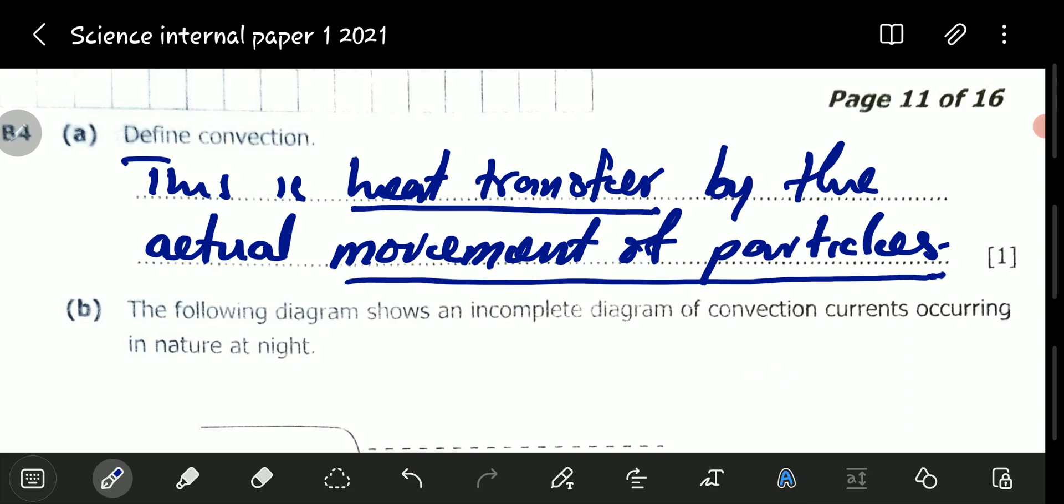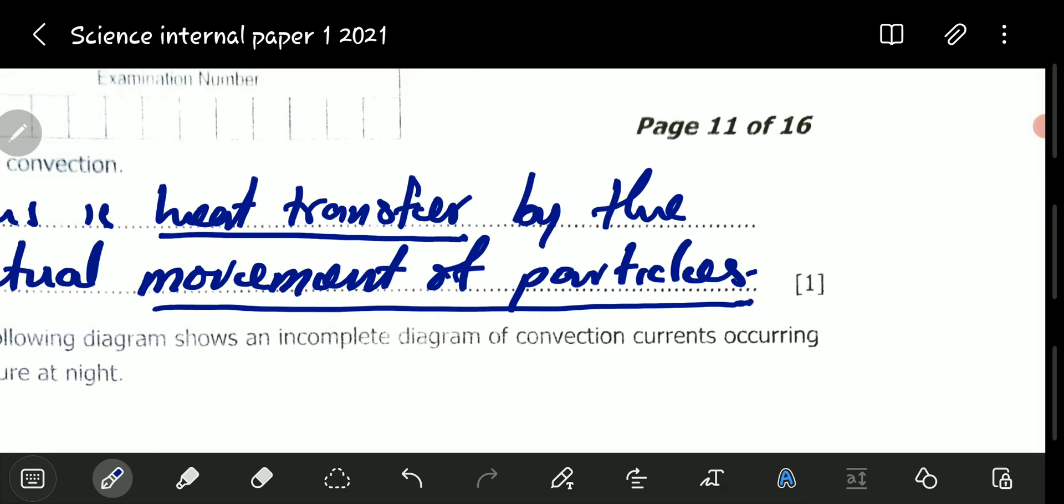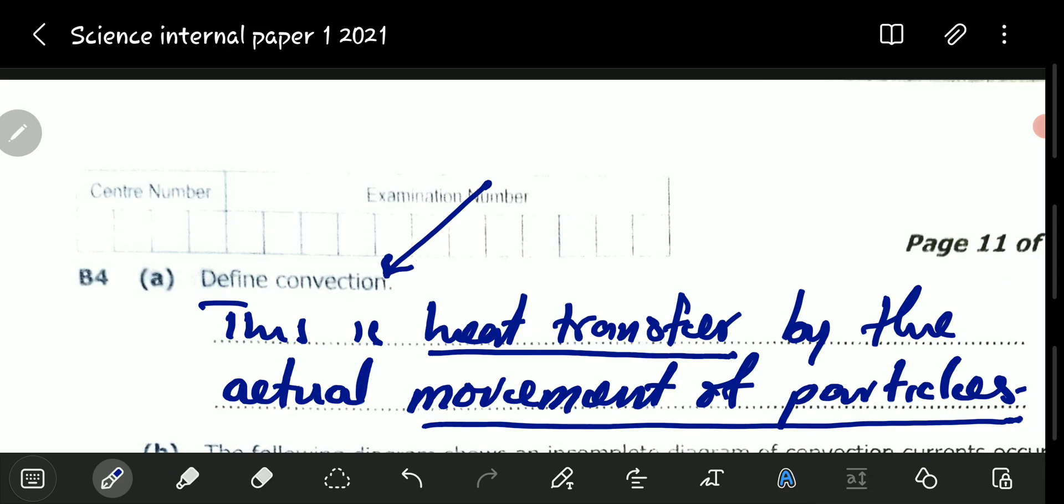These particles are moving because there is a difference in density. Convection comes about when there is a difference in densities within a fluid. The fluid part that has a lower density will move from the bottom to the top of the fluid, and as that happens, it carries heat with it.